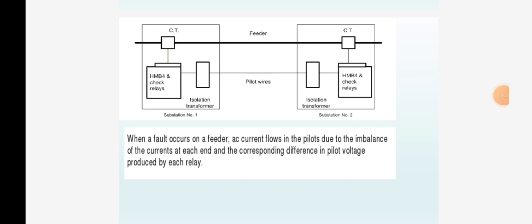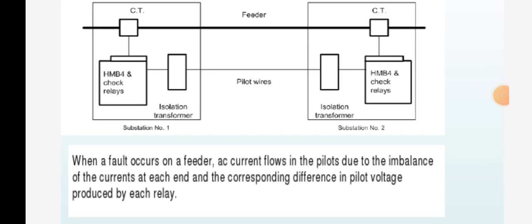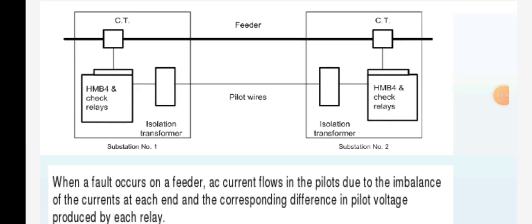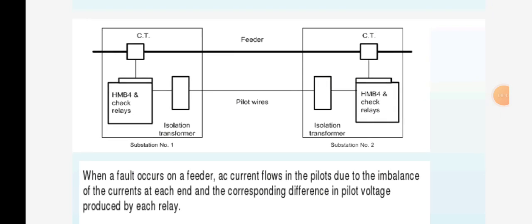In this diagram, we can observe the two current transformers and feeders. The pilot wire is connected to both current transformers. It has the HM, B4, check relays, isolation transformers, substation number 1 and substation 2, connected in between two substations. When a fault occurs on a feeder, the AC current flows in the pilot due to the imbalance of the currents at each end and the corresponding difference in pilot voltage produced by each relay.